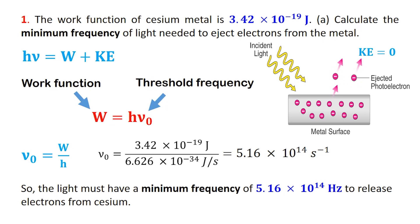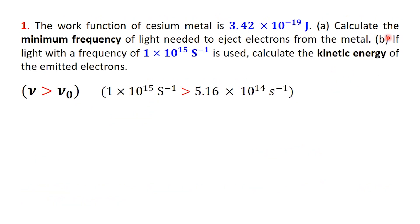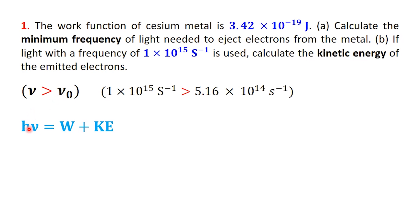Now that we've found the threshold frequency, let's move to the second part of the problem. This time, we want to know what happens if the light shining on cesium has a higher frequency than the threshold. Specifically, what is the maximum kinetic energy of the ejected electrons if the light has a frequency of 1 times 10 to the power of 15 hertz? To solve this, we go back to the full photoelectric equation: h nu equals w plus kinetic energy. Since the frequency nu is higher than the threshold, the electrons will not only be released but will also carry away some kinetic energy.